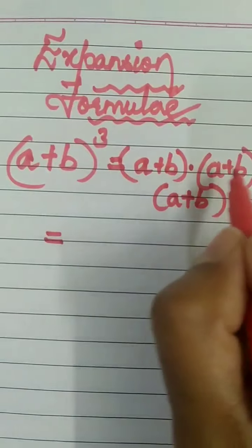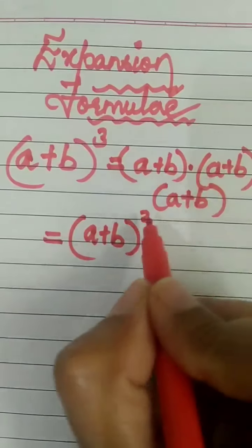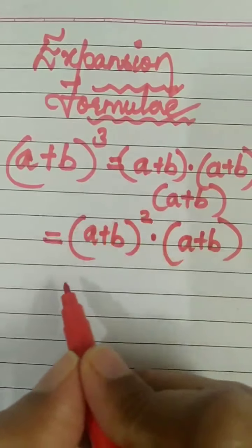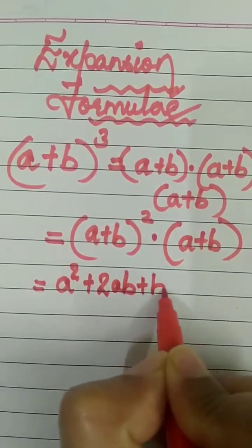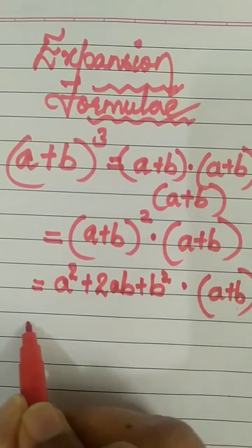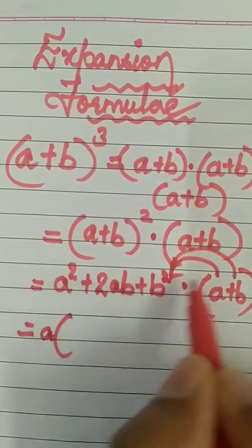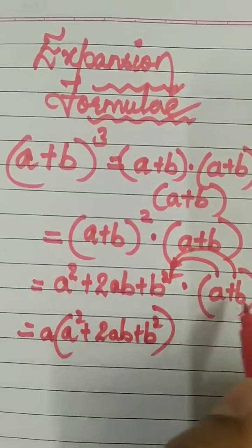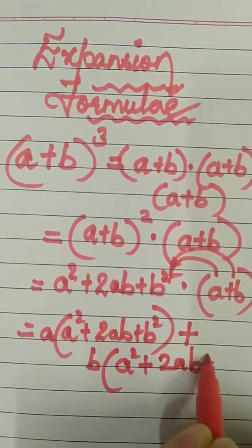A plus b into a plus b is (a + b) the whole square, multiplied by (a + b). Do you know the expansion of (a + b) whole square? It is a² + 2ab + b², and that is multiplied by (a + b). Now in the next step, we multiply a by the whole thing: a(a² + 2ab + b²), plus b(a² + 2ab + b²).